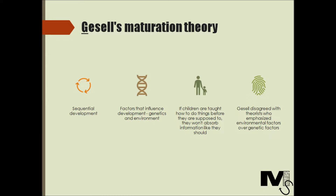He elaborated on two factors that influence development: genetics and environment. Since each child follows his or her own pace in development, genetics determines this pace of development. This also means that if children are taught how to do things before they are supposed to, they won't necessarily absorb information like they should. Although he considered environmental aspects to be important, he disagreed with theorists who emphasised environmental factors over genetic factors.